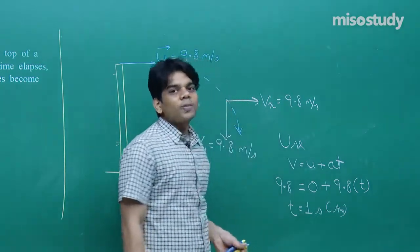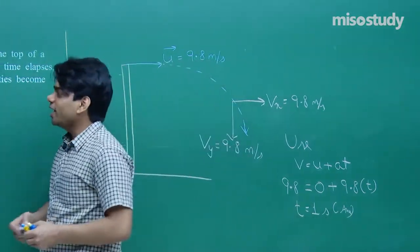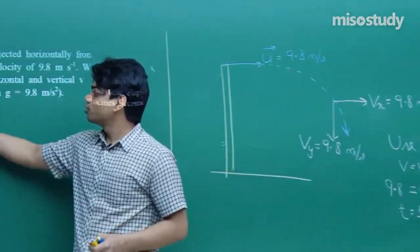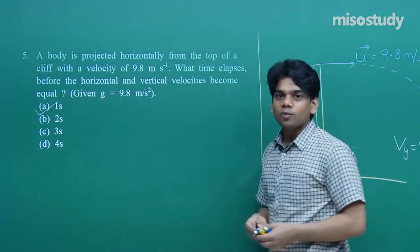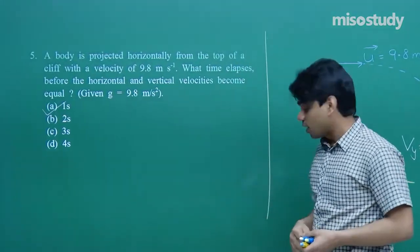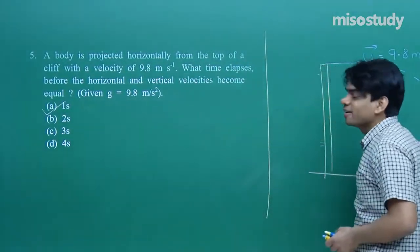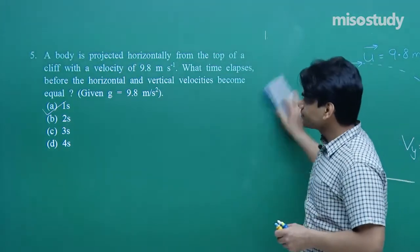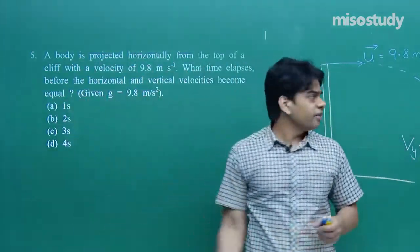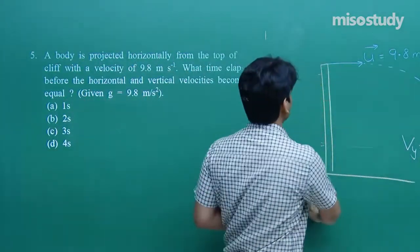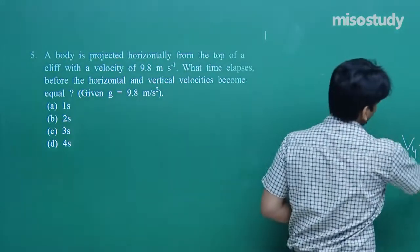Option a, t = 1 second, is the correct answer. We used the equation of motion v = u + at to find the time at which vertical velocity equals horizontal velocity. All these questions show how to make the diagram and choose the right formula for projectile problems.